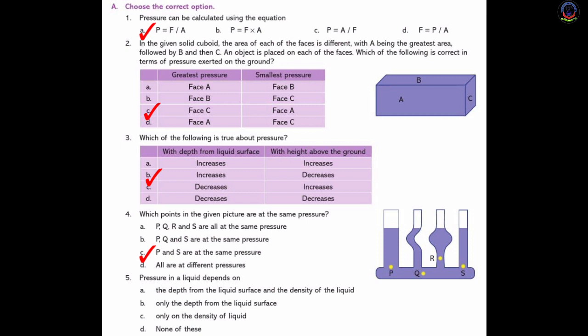Number 5: Pressure in a liquid depends on — Option A: the depth from the liquid surface and the density of the liquid. Option B: only the depth from the liquid surface. Option C: only the density of the liquid. Option D: none of these. The answer is A — pressure in a liquid depends on the depth from the liquid surface and the density of the liquid.